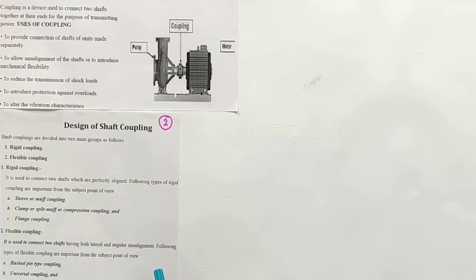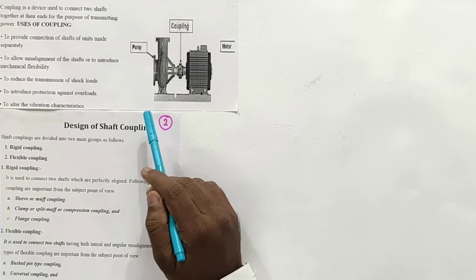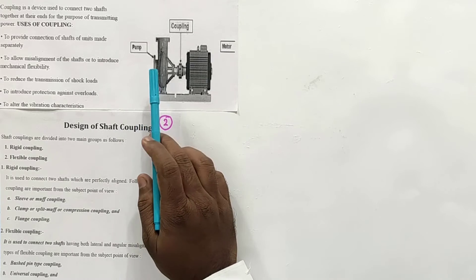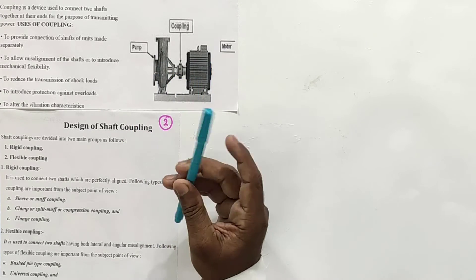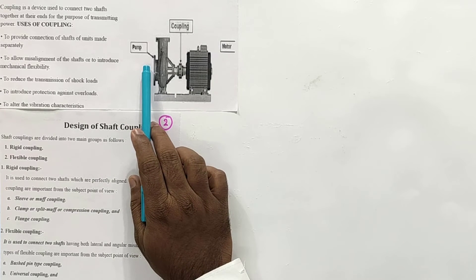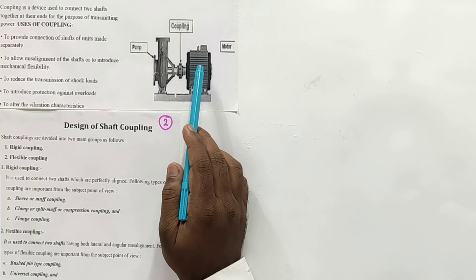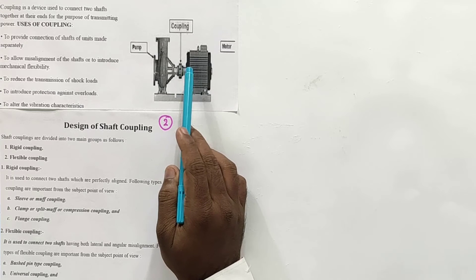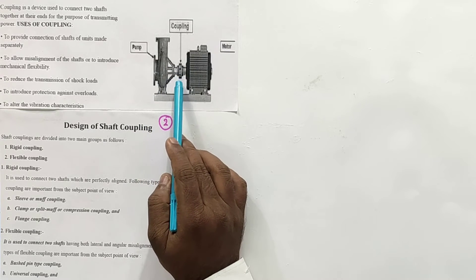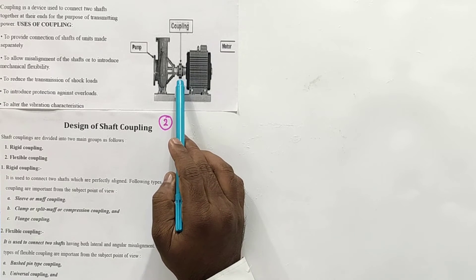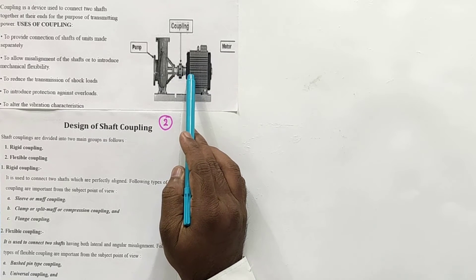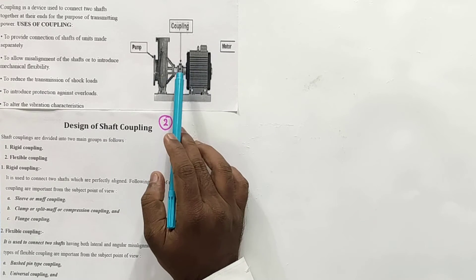As shown on the screen, one example of coupling placement is between a pump and a motor. The motor transmits rotation, and that rotation passes to the pump with the help of the coupling. So the coupling acts as a connector — an agent to transmit motion, torque, and power very easily.